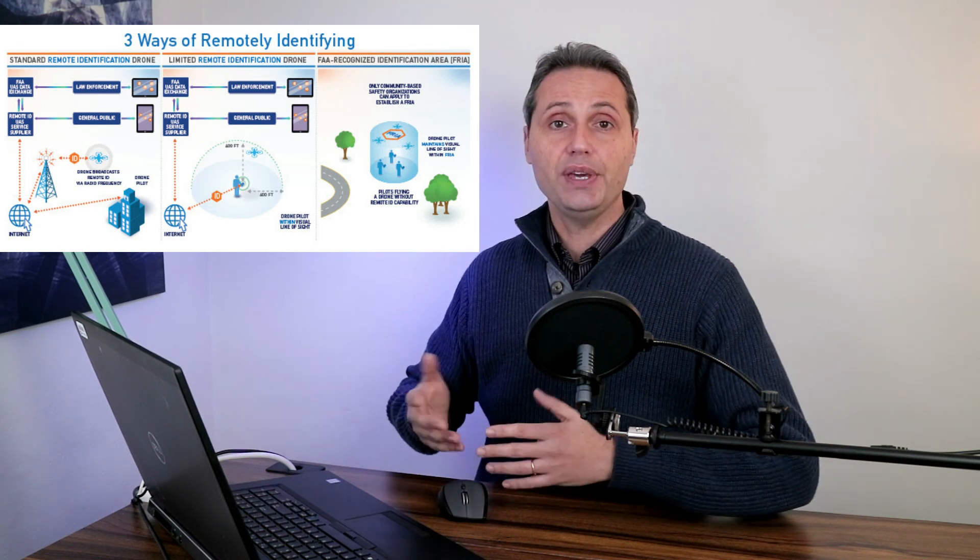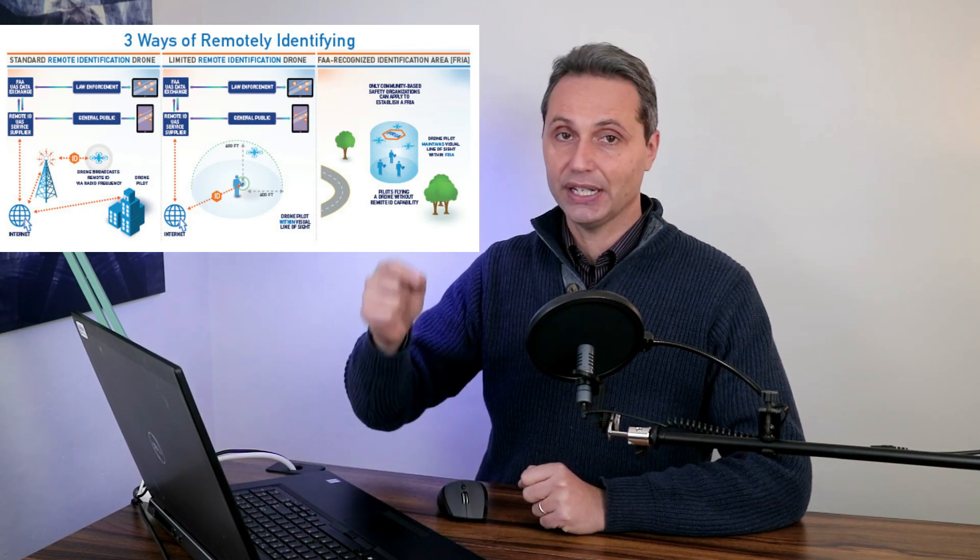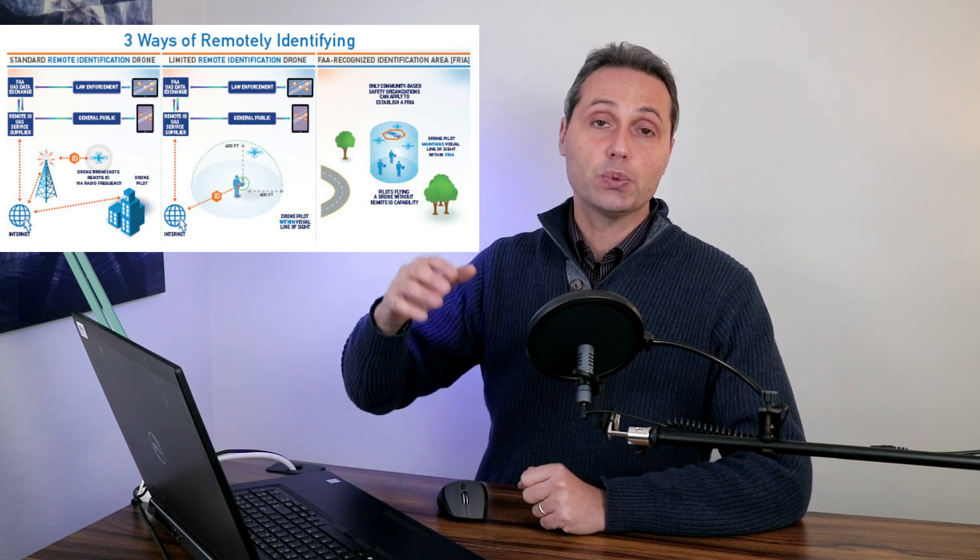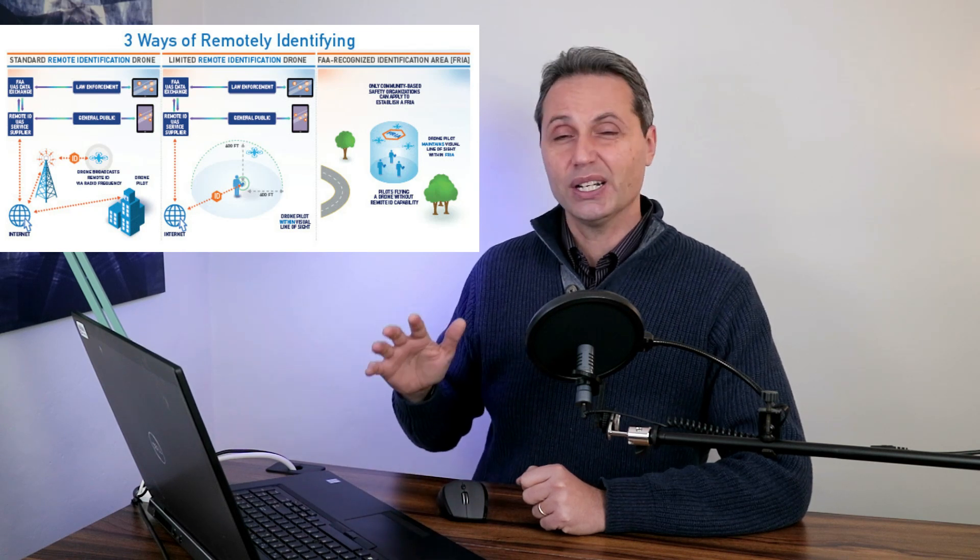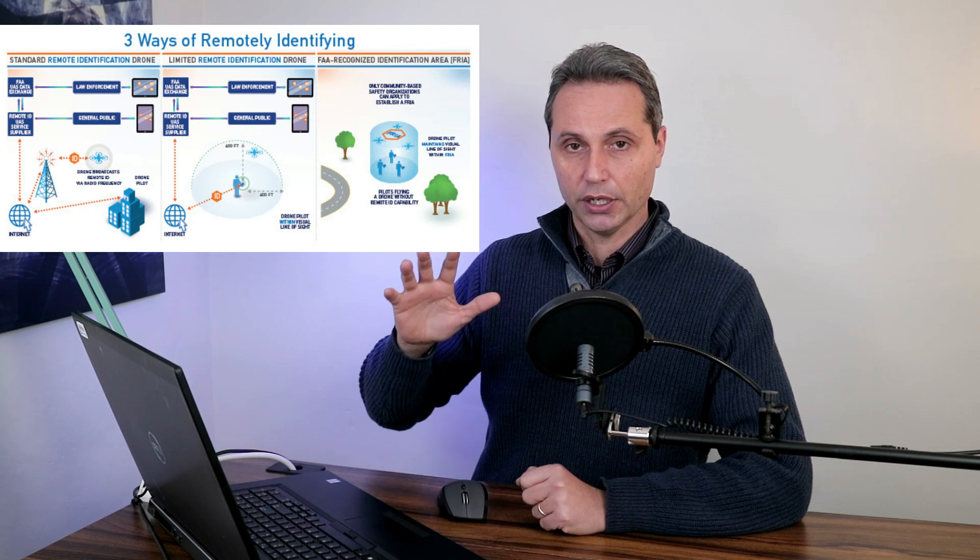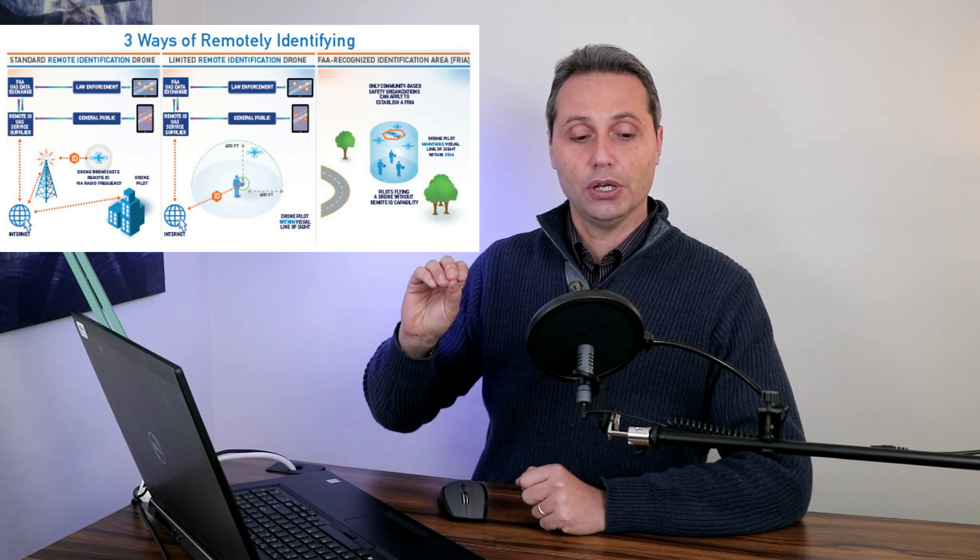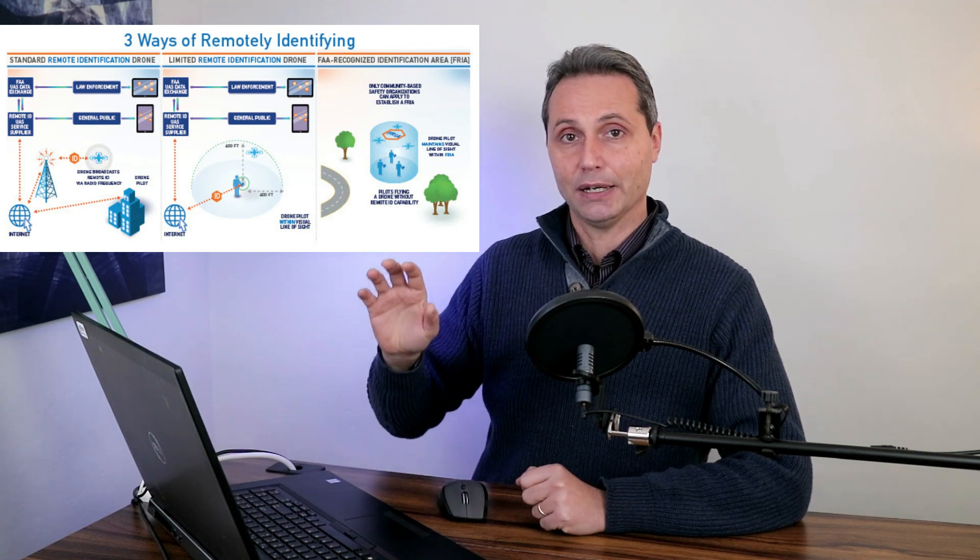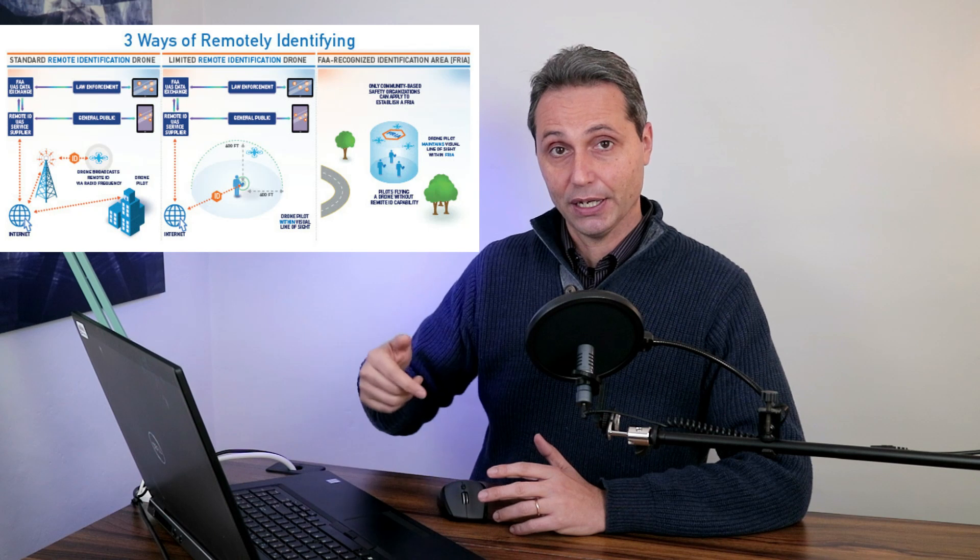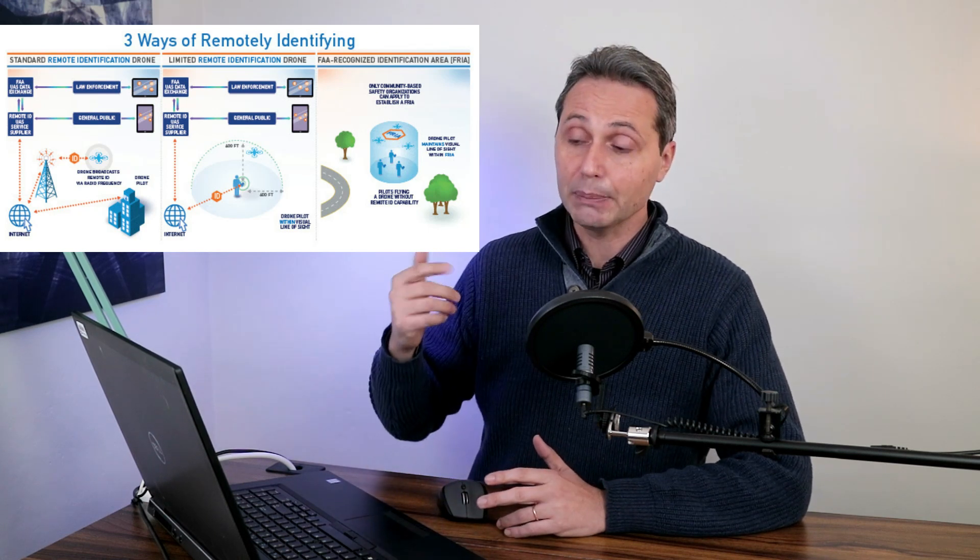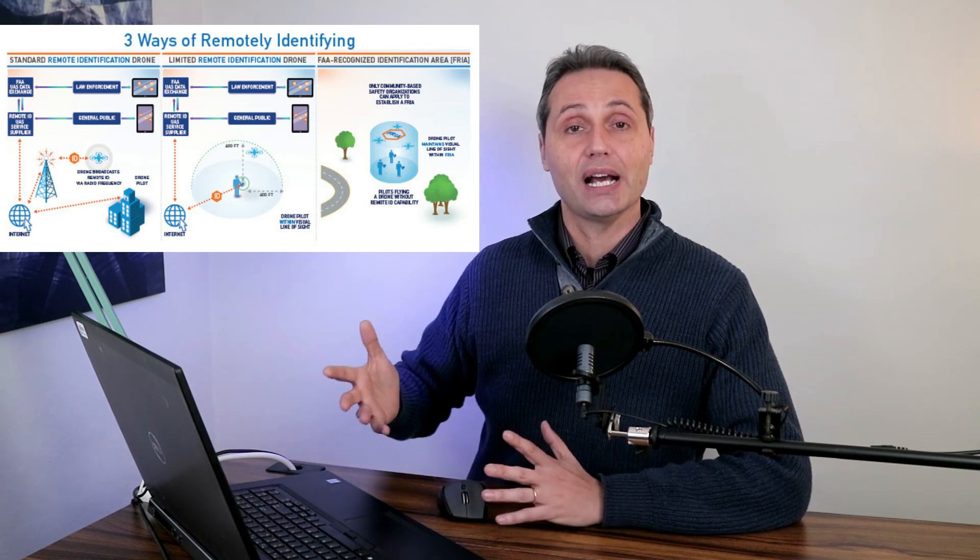So what is the standard ID? Basically, the UAV has to be equipped with a broadcast device that will share the drone ID and serial number and position and so on, as well as the ground station position and all the data of its operator. Now it's not clear whether those data are going to be public or if only part of it is going to be public and the identity, for example, of the person in the remote piloting command is available only to law enforcement. This is not extremely clear to me.